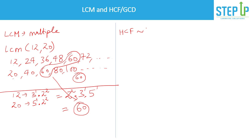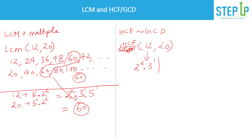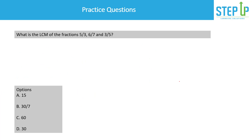Now let's calculate the HCF — Highest Common Factor — also known as GCD (Greatest Common Divisor). For HCF of 12 and 20: 12 = 2² × 3¹ and 20 = 2² × 5¹. For HCF we look for what is common in both. The prime 3 is not in 20, and 5 is not in 12, but 2 is common in both. The highest common power of 2 is 2², so HCF(12, 20) = 4.